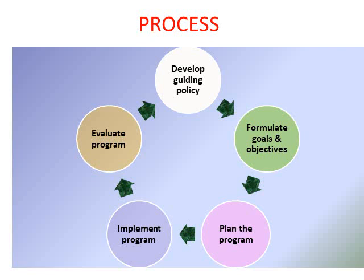Now, what is the process of a staff development program? The first step is developing a guiding policy. The organization's authority identifies what is needed — for example, online education — and formulates a policy. The second step is to formulate goals and objectives, defining how the program will be delivered and what outcomes are expected, such as ensuring sessions are timely and students are not disadvantaged. The third step is to plan the program.